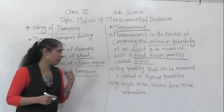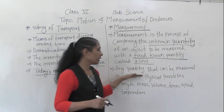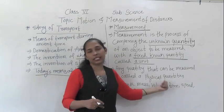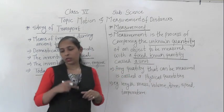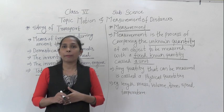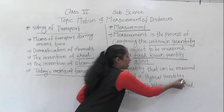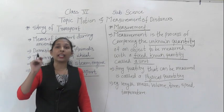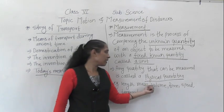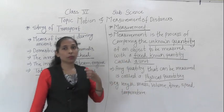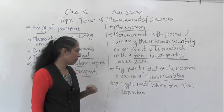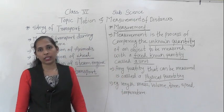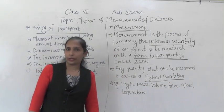There are different units we use. Any quantity that can be measured is called a physical quantity. There are many examples of physical quantities: length, mass, volume, time, speed, and temperature — all of these are physical quantities.